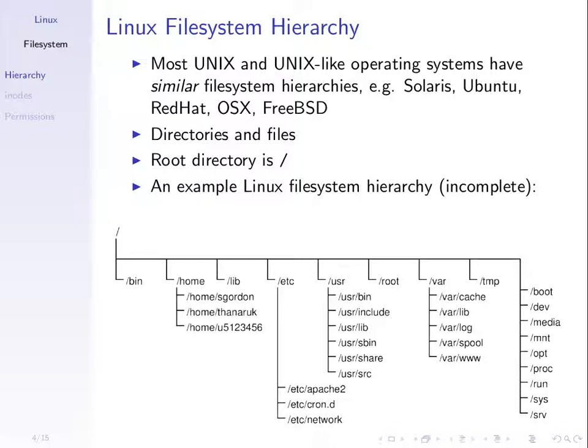We have a top level of the hierarchy which we refer to as a root directory. Under the root directory there are a number of sub-directories. This picture gives an example of a common file system hierarchy. There's a root directory designated by a forward slash, and under that are sub-directories like /bin, /home, /usr, and so on.